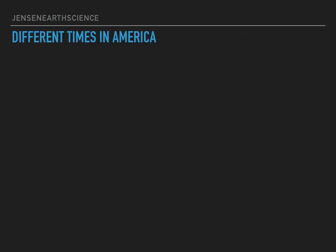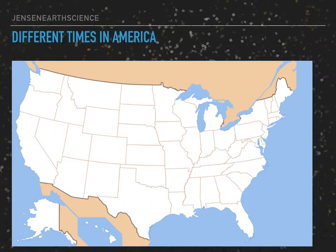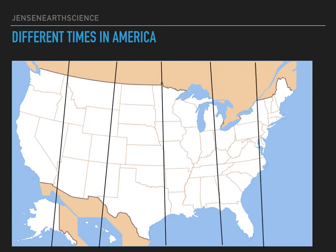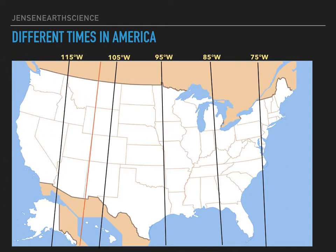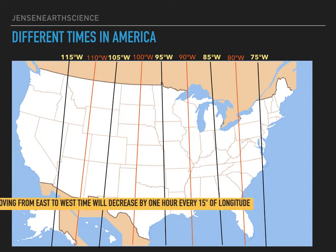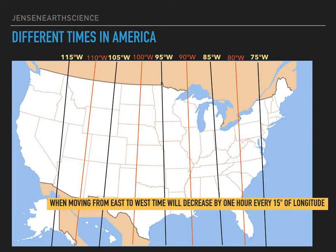So different times in America. I need to add all my longitude lines in America that we'll be using for this example. Here's all the longitude lines we'll be using. When moving from east to west, time will decrease by one hour every 15 degrees of longitude — so this would be like moving from New York to California.